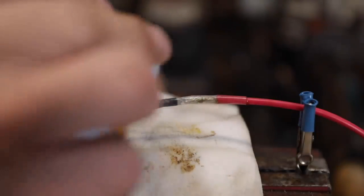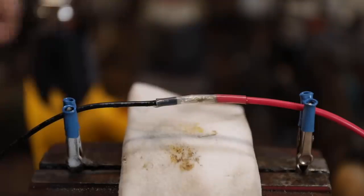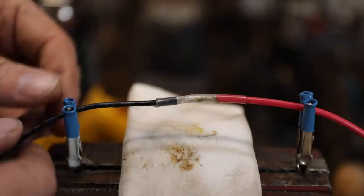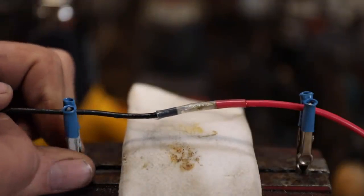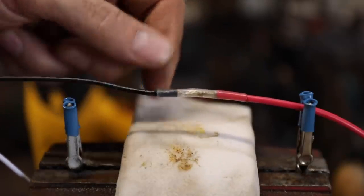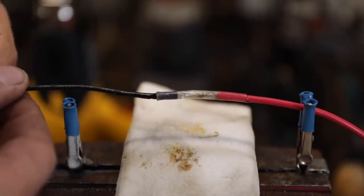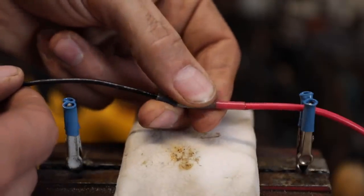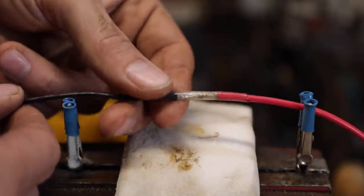Now once that's cool to the touch, you can clean that silicone off there and you have a really good—as good as you're going to get—waterproof connection for joining two wires together that's probably going to be tougher than the wire itself.